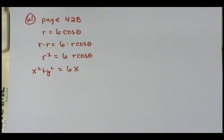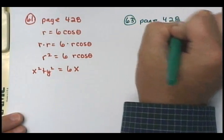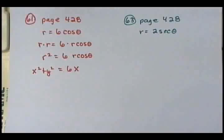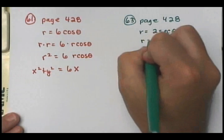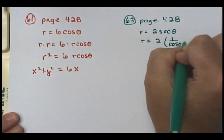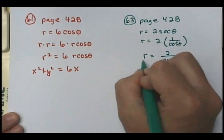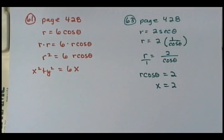Look at 63. We have r equals 2 secant theta. Secant theta is the same thing as 1 over cosine theta, so this is r equals 2 over cosine theta. If I cross-multiply, then r cosine theta equals 2. And r cosine theta is x, so x equals 2. Could it be that easy? Yes — x equals 2.